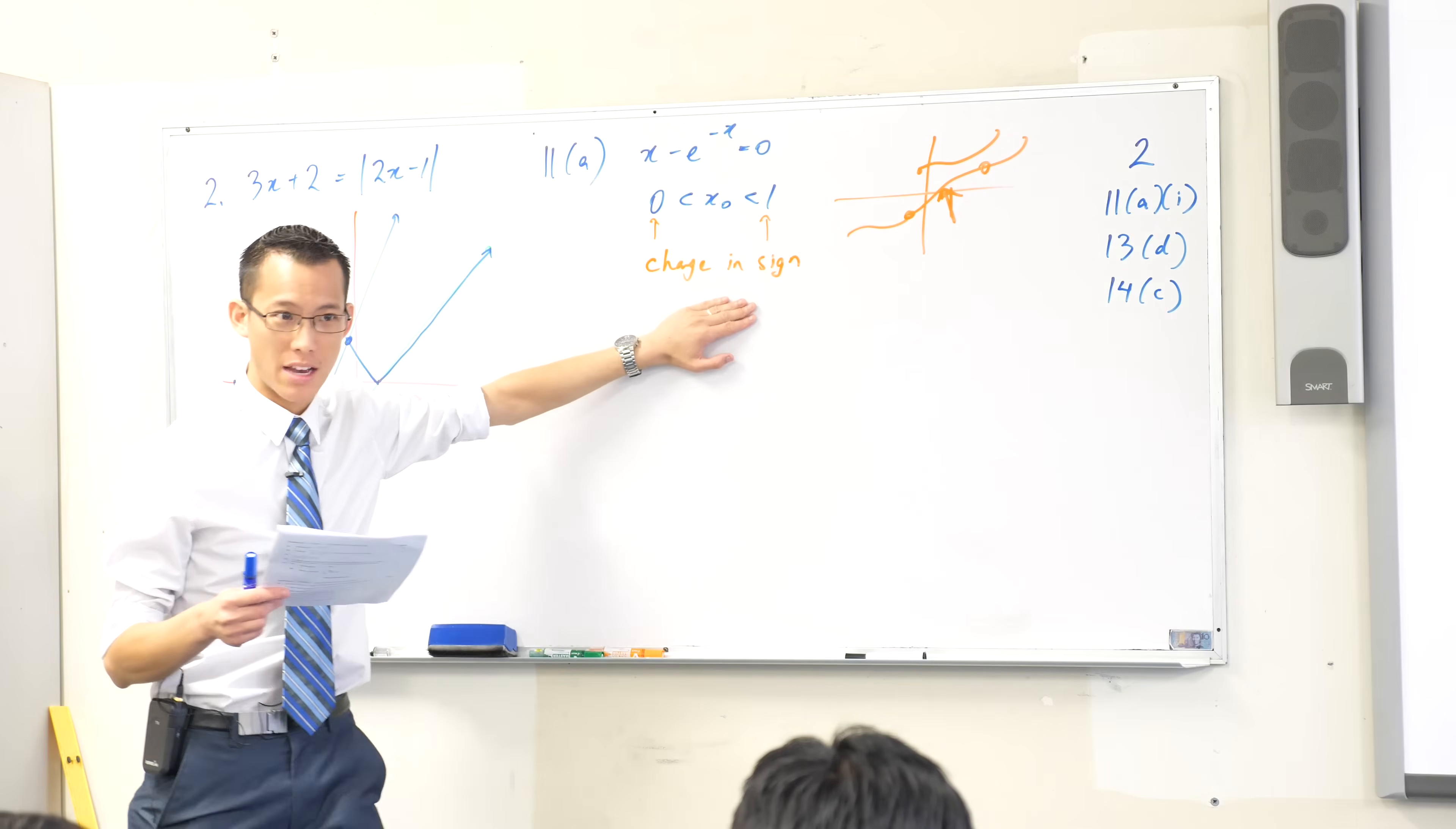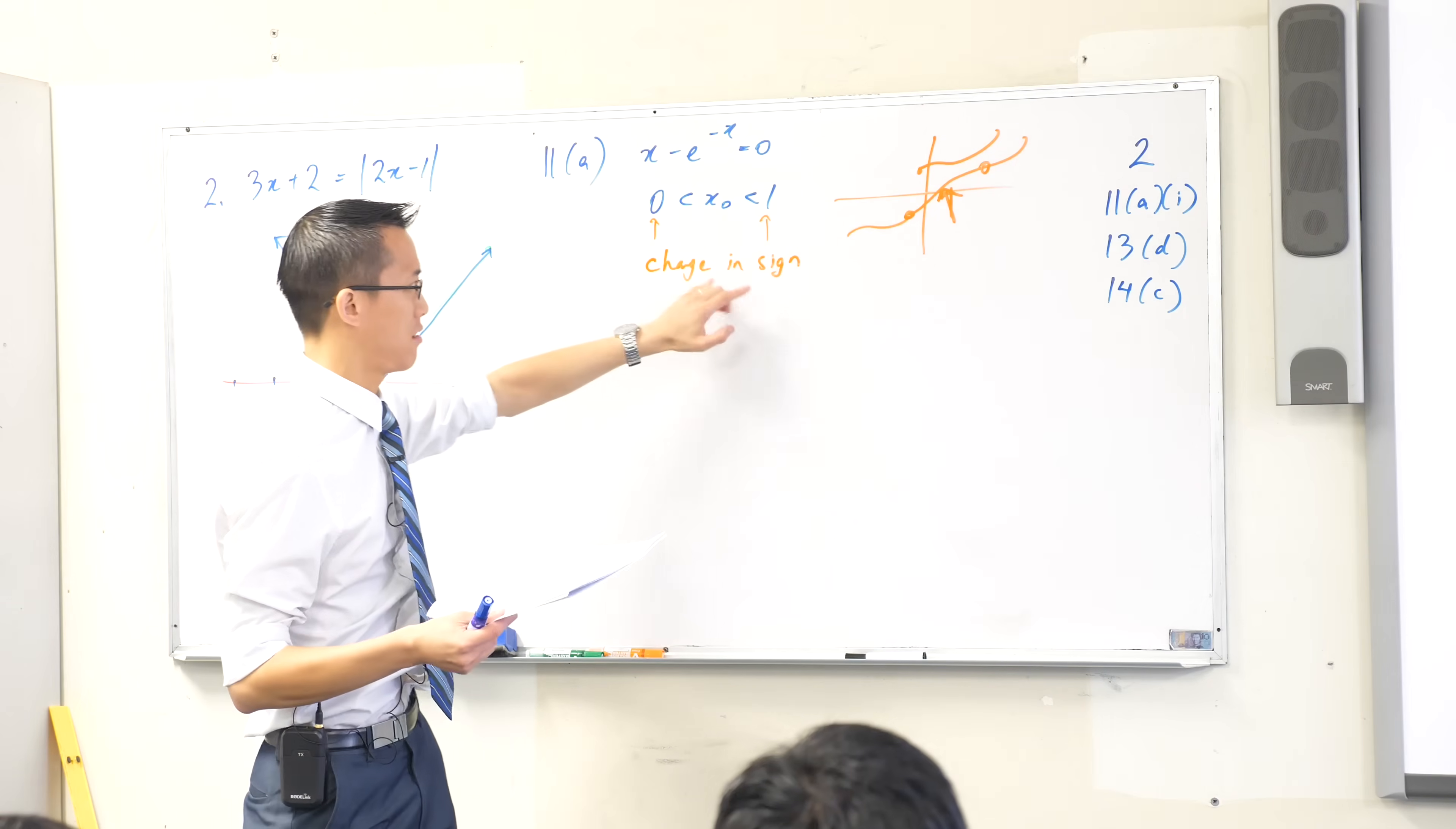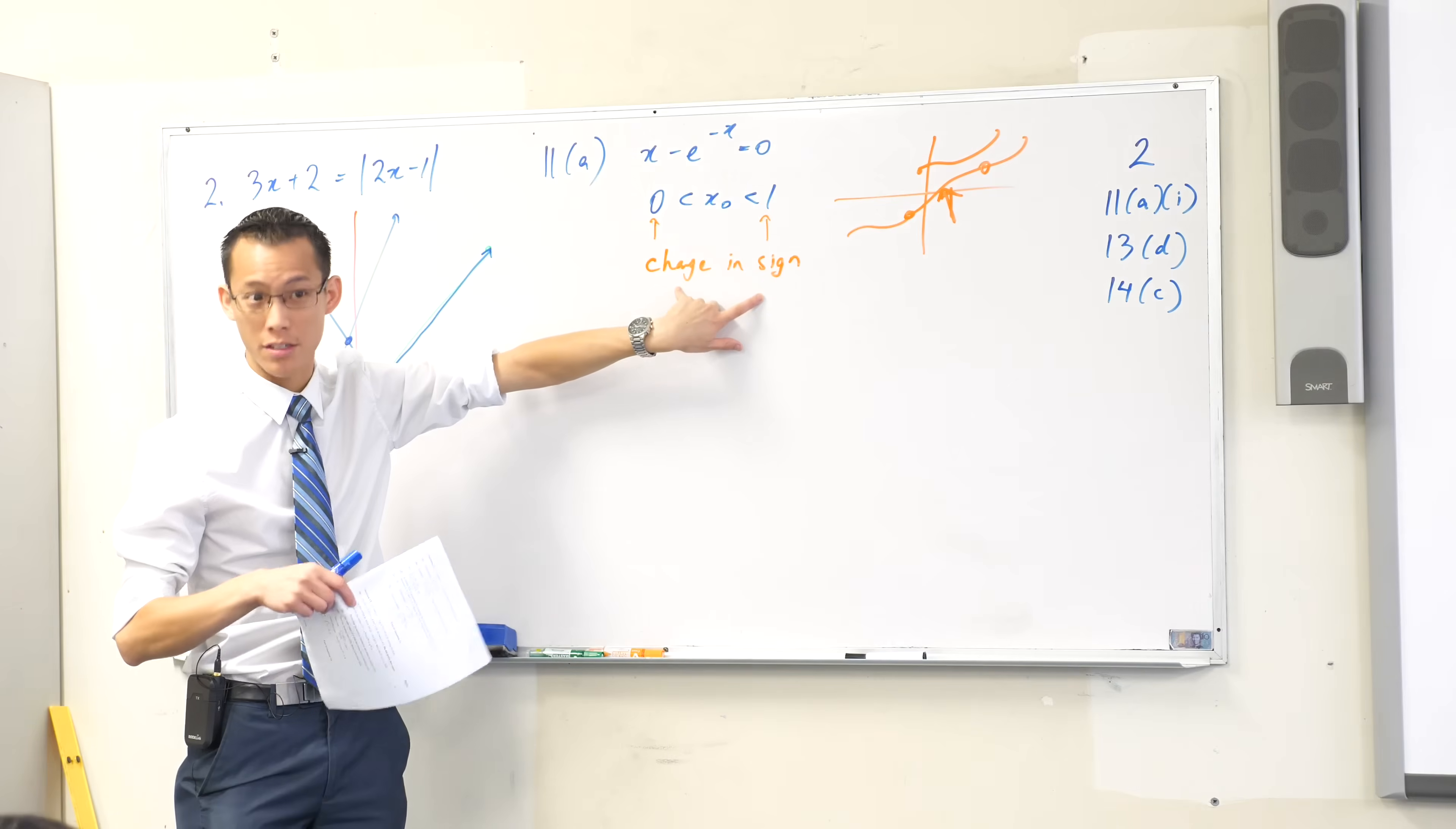But how many times have we shown that it crosses the axis? And if we've only tested on the ends, we actually don't know how many times it crosses the axis, yeah?